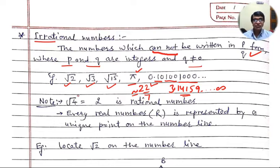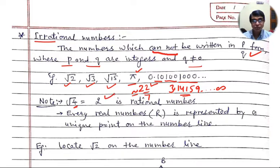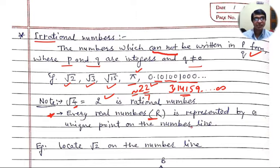Now, are all numbers under the square root irrational? No, because root 4 — 4 is a perfect square — so root 4 can be written as 2, which is rational because 2 can be written as 2 by 1. One more important point: every real number can be either rational or irrational, and every real number can be represented by a unique point on the number line, whether it is rational or irrational.